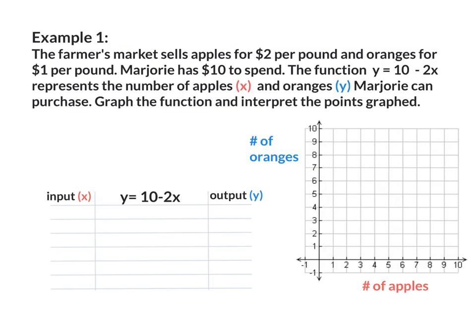Example number 1. The farmers market sells apples for $2 per pound and oranges for $1 per pound. Marjorie has $10 to spend. The function y equals 10 minus 2x represents the number of apples x and oranges y Marjorie can purchase. Graph the function and interpret the points graphed. We are going to use a function table to find our coordinates. Remember our x's are our apples and our y's are our oranges.